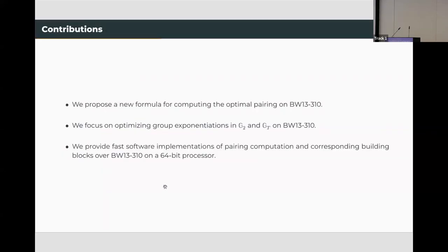In this work, we first propose a new formula for computing the optimal pairing on this curve. Then we focus on optimizing group exponentiations in G2 and GT on this curve. Finally, we provide faster software implementation for pairing computation and corresponding building blocks over this curve on a 64-bit processor.